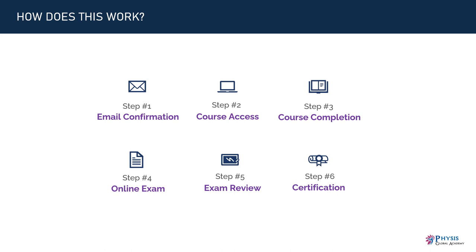Once you enroll in this training program, we will first send you a confirmation email to your registered email address, followed by course access details within the next 48 hours. You then go through all the course modules at your own pace and time, and can contact us anytime for queries. After finishing all modules, we grant you access to the online exam. The exam is open book and self-paced — it is not timed. You attempt all exam questions and submit them to us, and our faculty will review and issue your certification of completion along with a performance card within 14 working days.